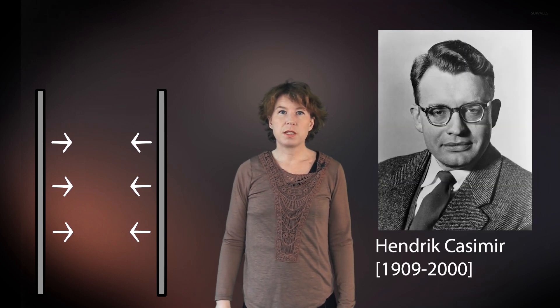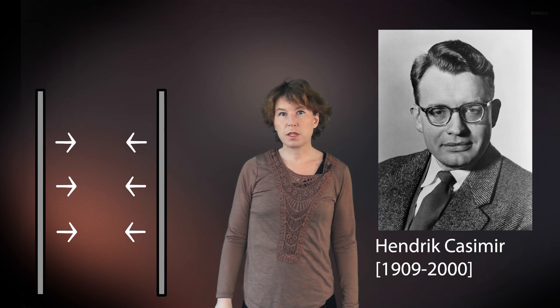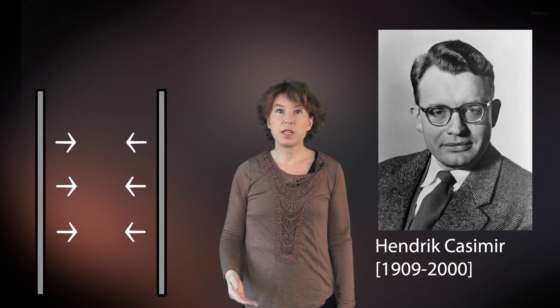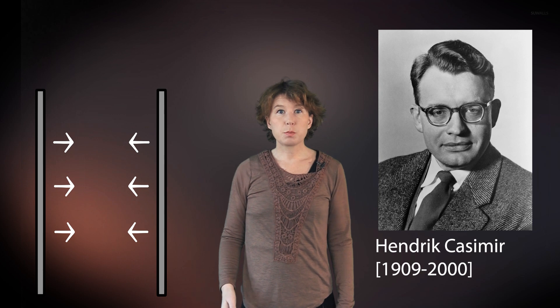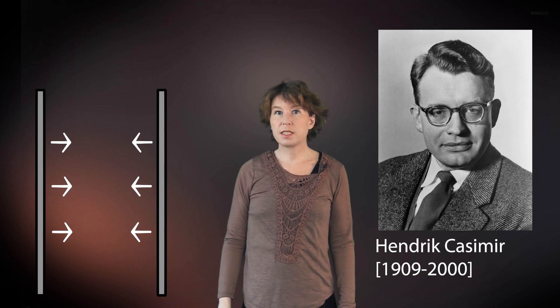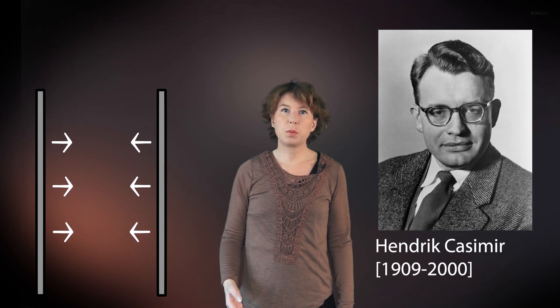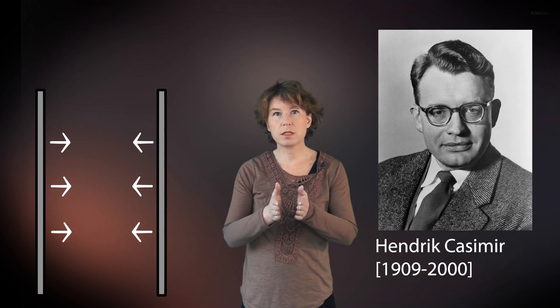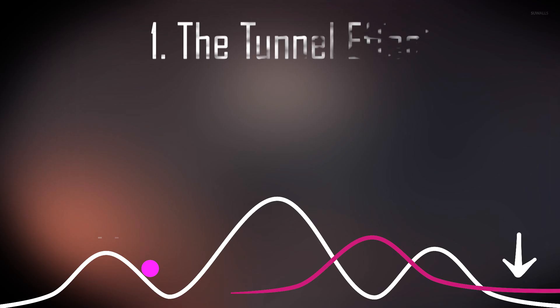This is the Casimir effect named after Hendrik Casimir. It is created by quantum fluctuations that create a pressure even in vacuum. This pressure is lower between the plates than outside of them so that the two plates are pushed towards each other. However, the force from the Casimir effect is very weak and can be measured only at very short distances.